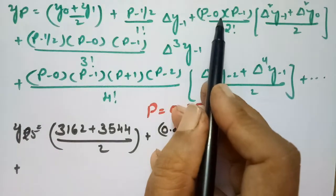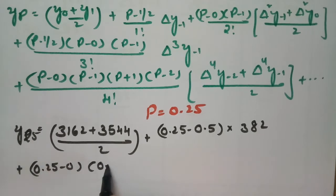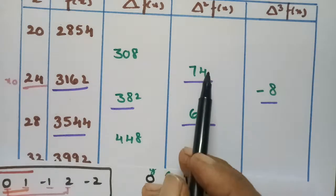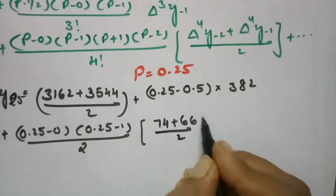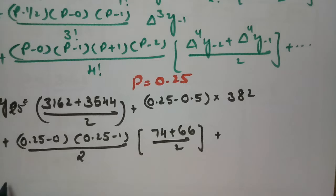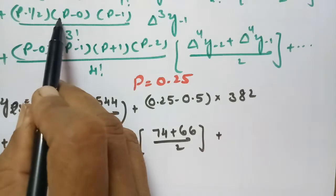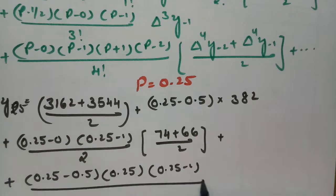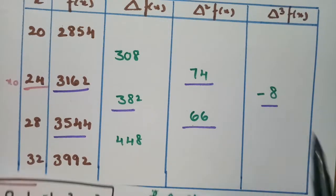Next term: p(p−1)/2! × (Δ²y₋₁ + Δ²y₀)/2 = 0.25 × (−0.75)/2 × (74 + 66)/2. And then (p − 0.5) × p × (p−1)/3! × Δ³y₋₁ = (0.25 − 0.5) × 0.25 × (0.25 − 1)/6 × (−8), which is negative.